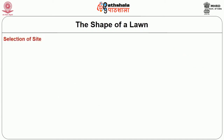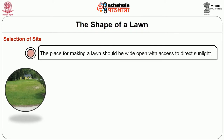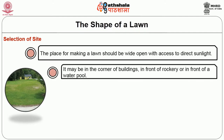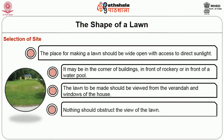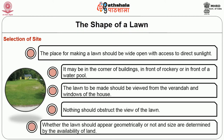First, we will see the selection of site. The place for making a lawn should be wide open with access to direct sunlight. It may be in the corner of the buildings, in front of rockery, or in front of the water pool. The lawn to be made should be viewed from the veranda and windows of the house. Nothing should obstruct the view of the lawn. Whether the lawn should appear geometrically or not, and its size, are determined by the availability of the space.